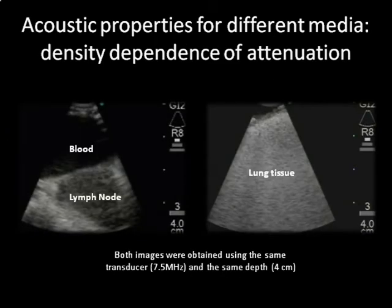For example, attenuation depends on tissue density, being much lower in fluid than in air. Reflection, on the other hand, depends on differences in acoustic properties between two media. The larger the proportion of reflected ultrasound, the stronger the echographic signal, such as that seen when the ultrasound beam encounters lung tissue.